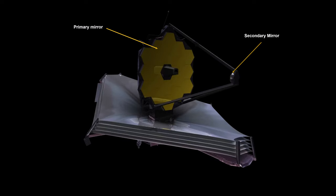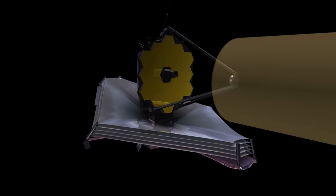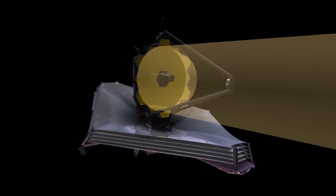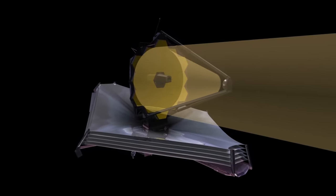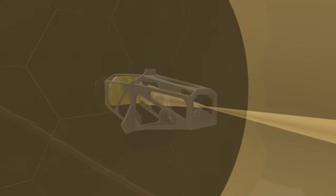Here are Webb's primary and secondary mirrors. The primary is the size of a tennis court. This animation shows the light path through the telescope. The light reflects off the primary and is focused onto the secondary, where it is beamed into the camera. Webb's mirrors are covered in a microscopically thin layer of gold, which optimizes them for reflecting infrared light.